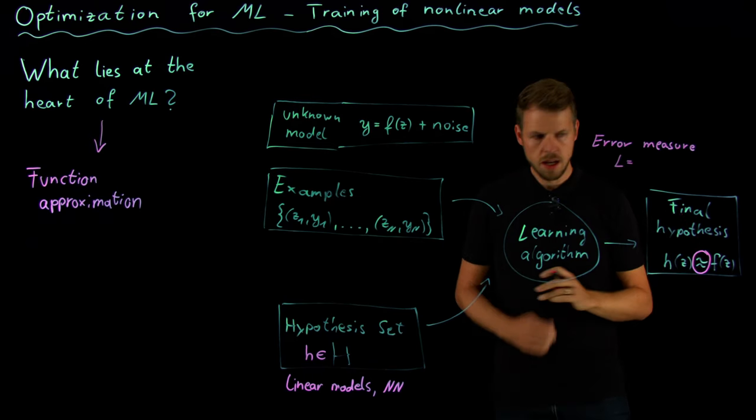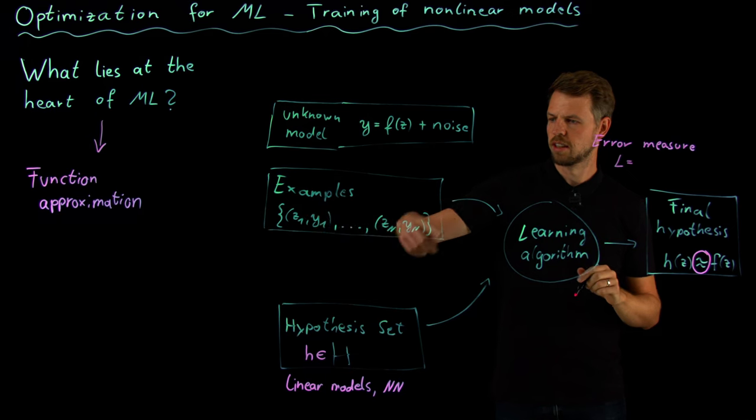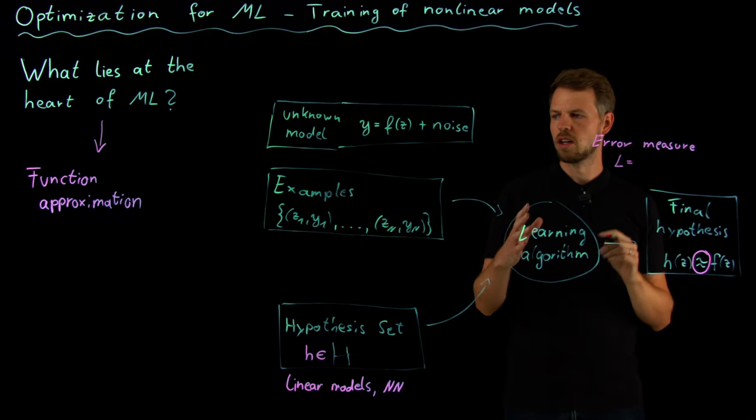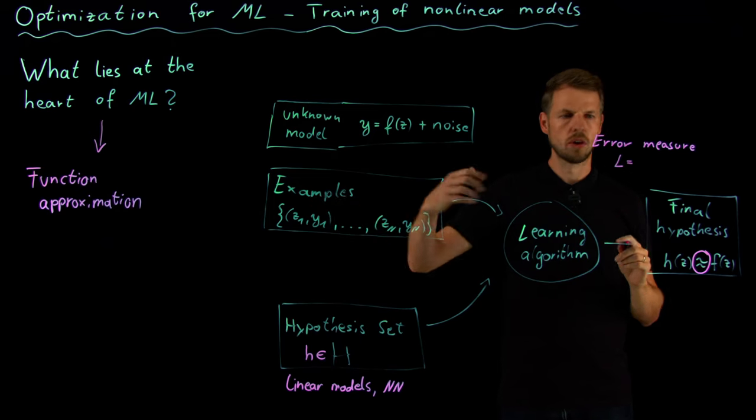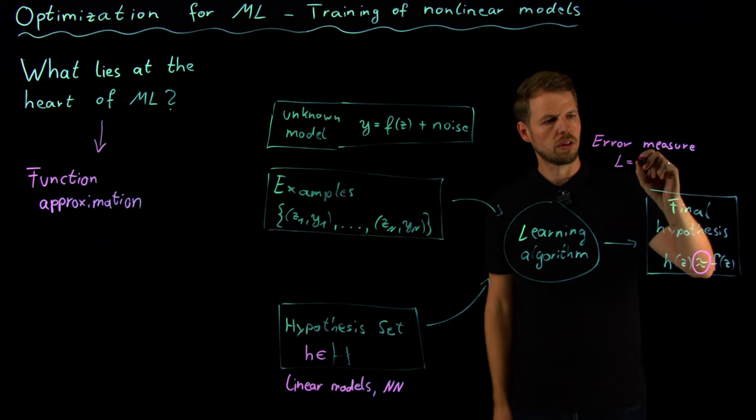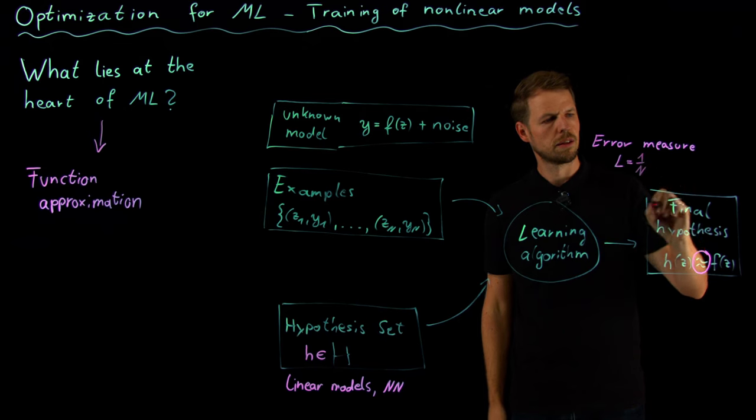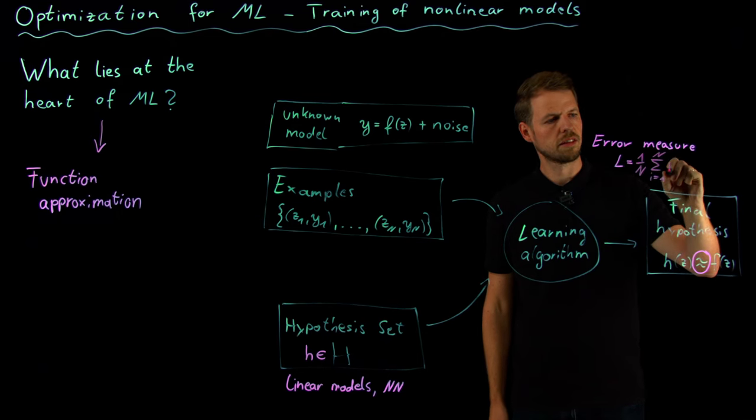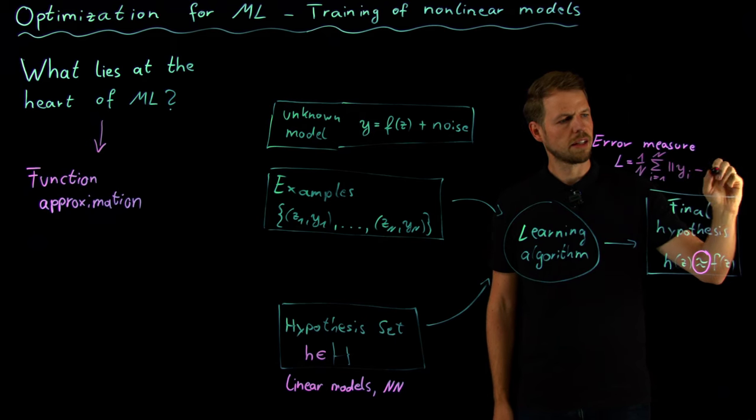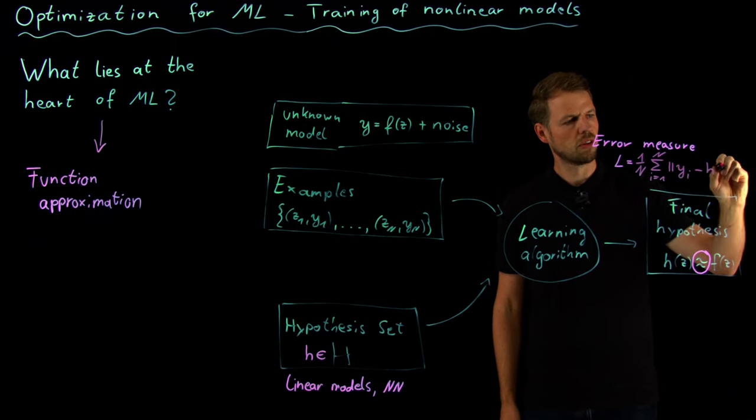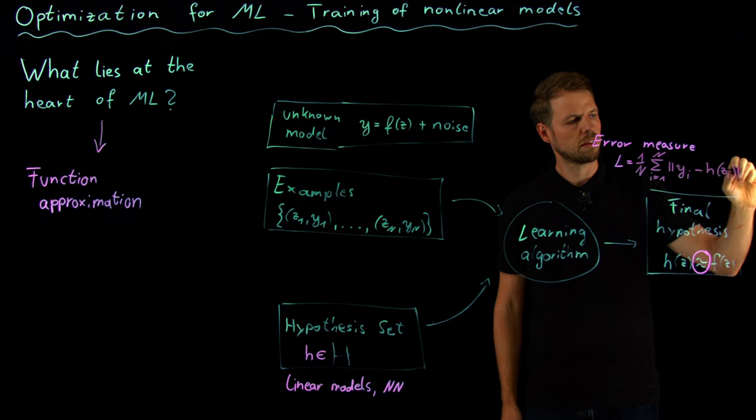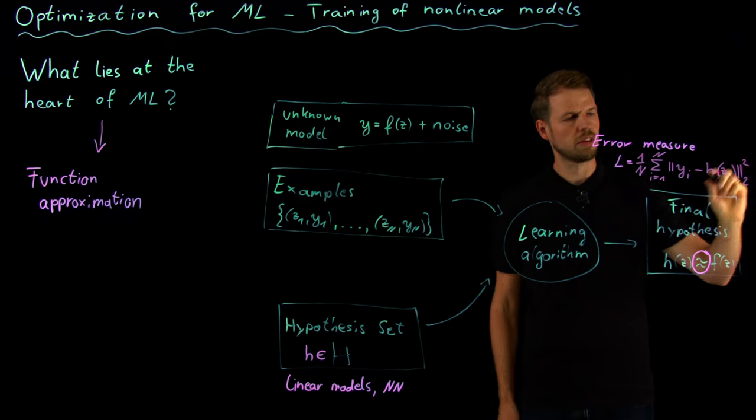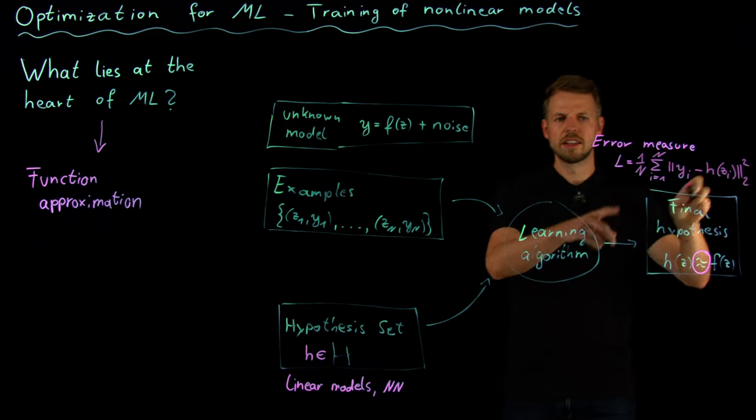We need to decide according to which metric, which measure tells us which is a good model and which is a bad one. So what we can say is let's take the examples and let's just say on average our model should do well on all the data that we have. So this L can be one over n and then the sum over all my samples from 1 to n, and then the distance between the output y_i and the input h of z_i.